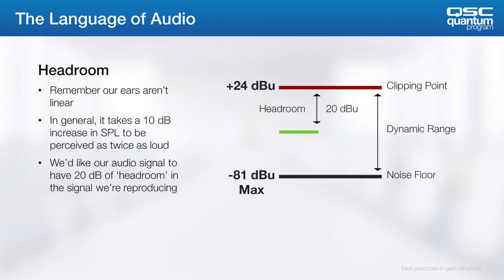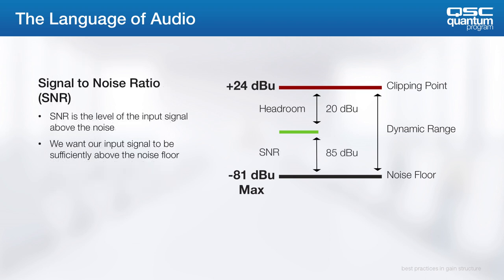Now remember, our ears are not linear. In general, it takes about a 10 dB increase in SPL to be perceived as twice as loud. If we allow for program peaks to be four times the average signal level, which is the industry standard, this means a headroom of 20 dB.